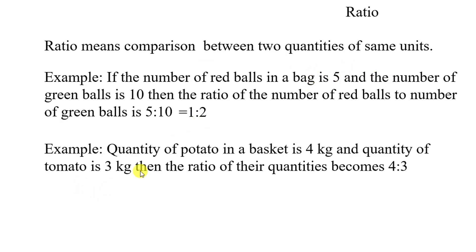For example quantity of potato in a basket is 4 kg and quantity of tomato is 3 kg. In a basket is 4 kg and tomato is 3 kg. So the ratio is 4:3. So 4 kg:3 kg is 4:3. So ratio is a pure number.